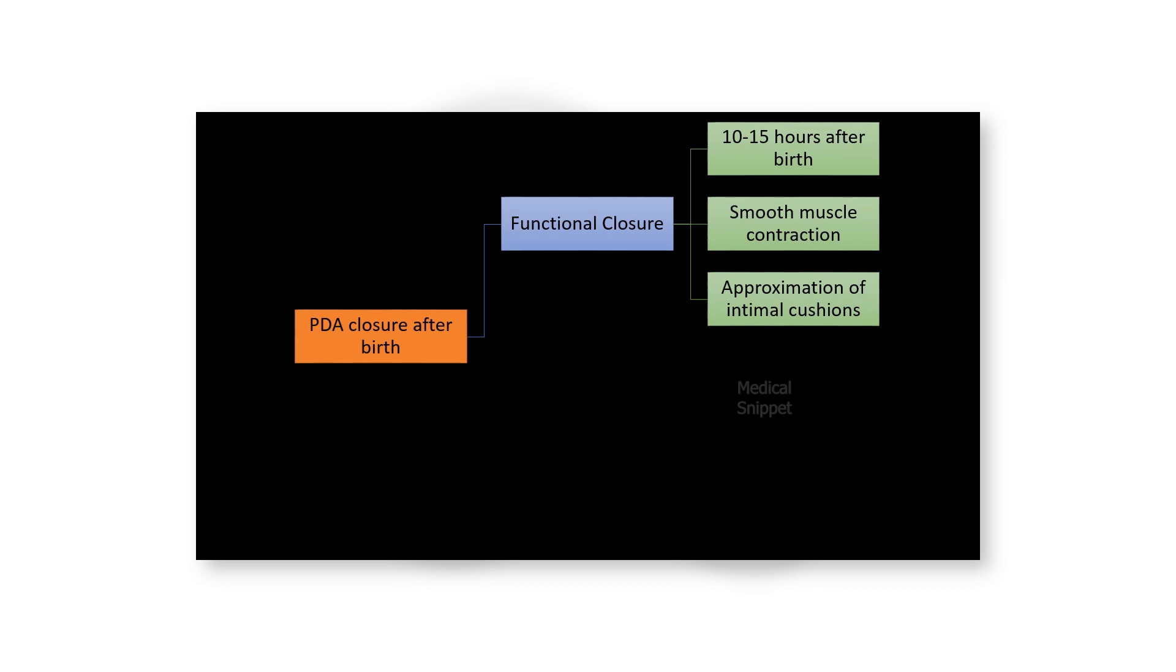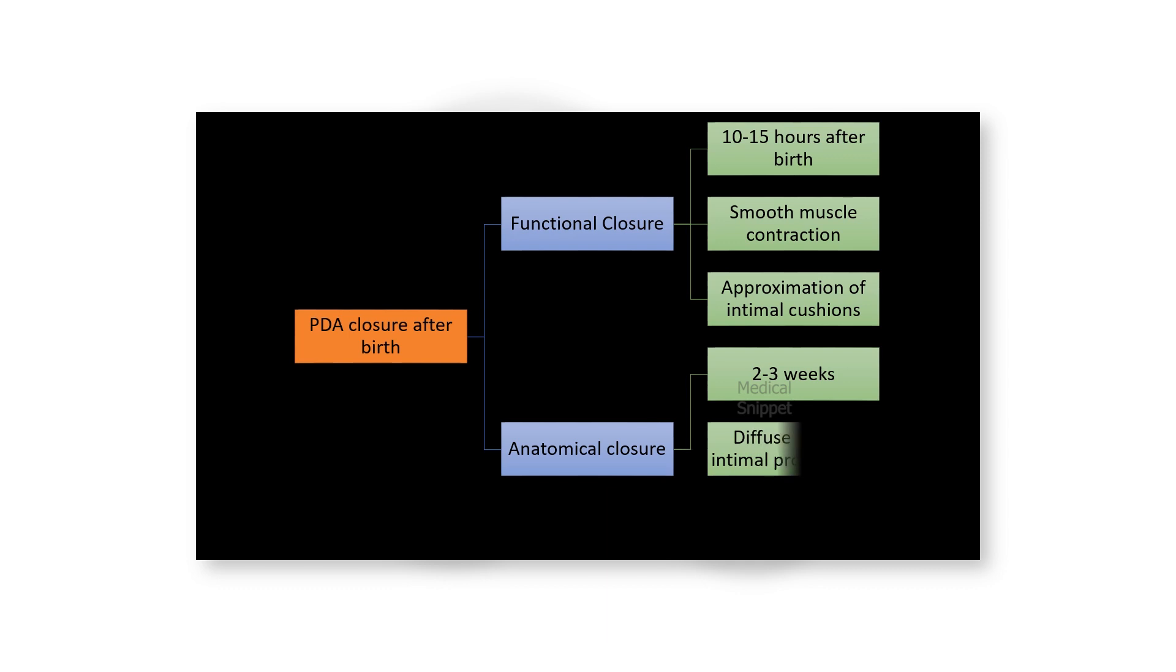The second stage, anatomical closure, is completed by 2-3 weeks. It is due to diffuse intimal fibrous proliferation, causing permanent closure of the ductus, now called ligamentum arteriosum.